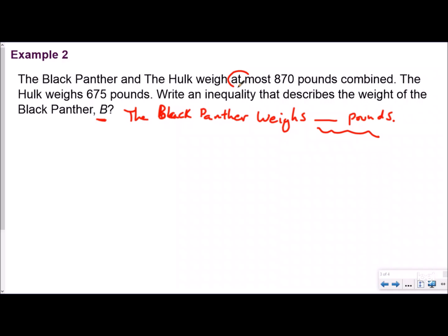We see this inequality word at most, and we need to circle that, very important. That tells us it's an inequality. 870 pounds, and then the word combined is very important. I circle that separately because that tells me 870 pounds is my total. The Hulk weighs 675 pounds, which makes a lot of sense because he should weigh a lot more than the Black Panther. And again, we're looking for the variable B that's going to represent the unknown quantity of how much the Black Panther weighs. So I'm going to draw my part-whole model again because it gave me the total. I'm trying to find a missing piece, and I'm going to put 870 right here.